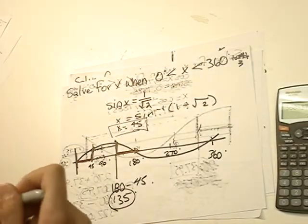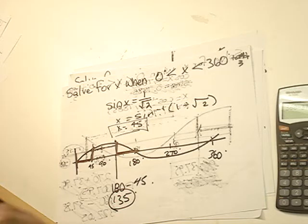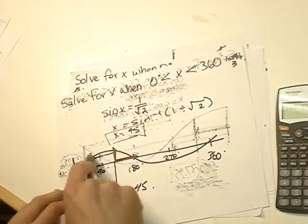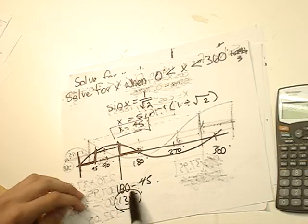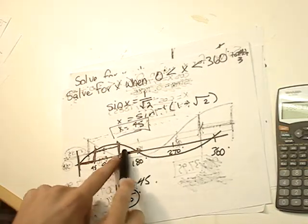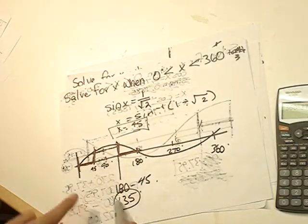Solve for x when x is between 0 and 360 degrees, 3 decimal places. When sine of x equals 1 over square root of 2. Do reverse sine, you will get 45 degrees. Once again, go through, look at the symmetry of the graph, do 180 minus 45, because this is 45, that is 45 as well. You'll get 135.